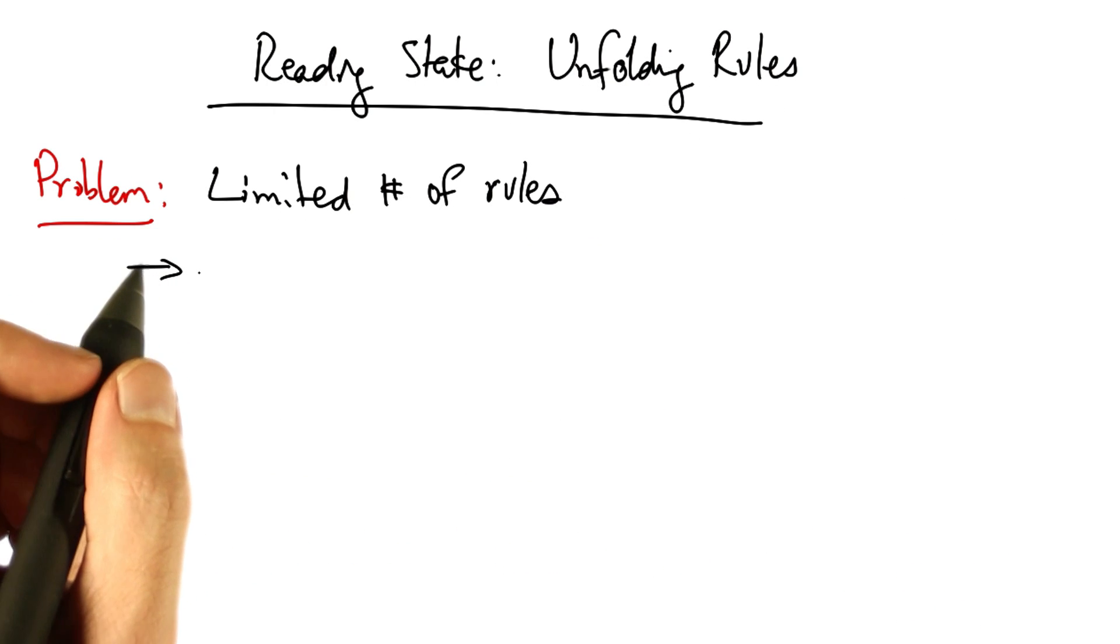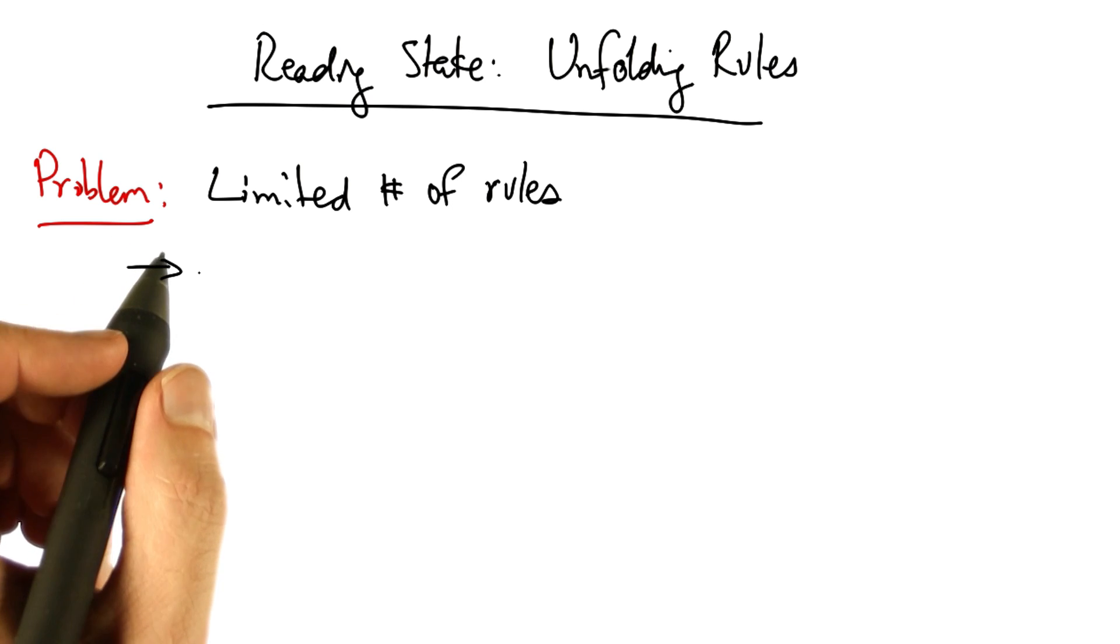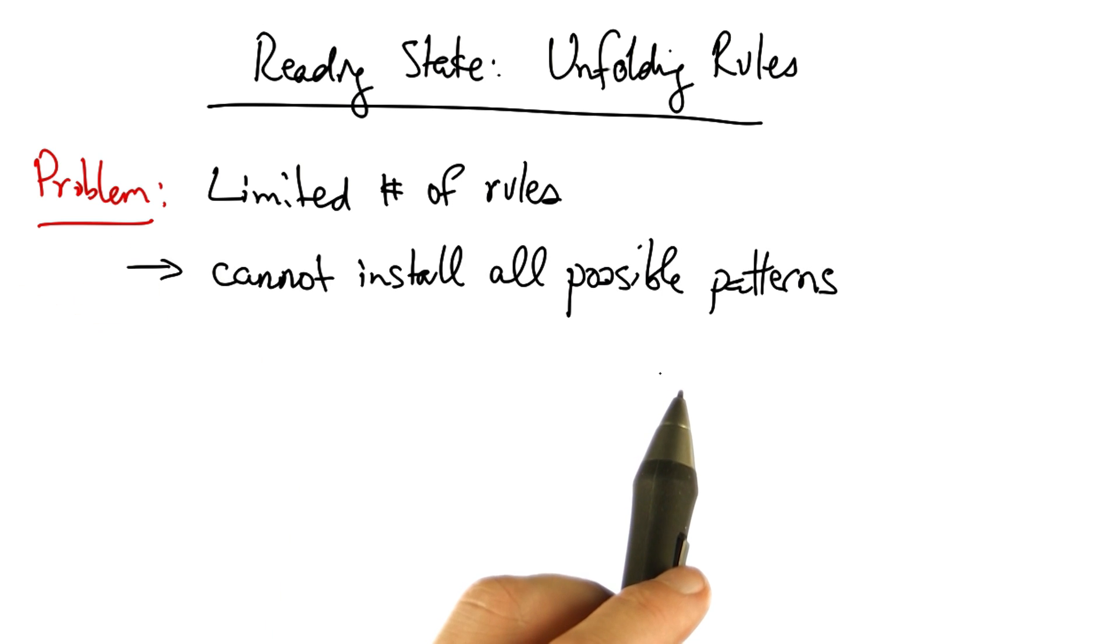Another problem that arises is that switches only have limited space for rules. It's simply not possible to install all possible rule patterns for every set of flows that we'd like to monitor.